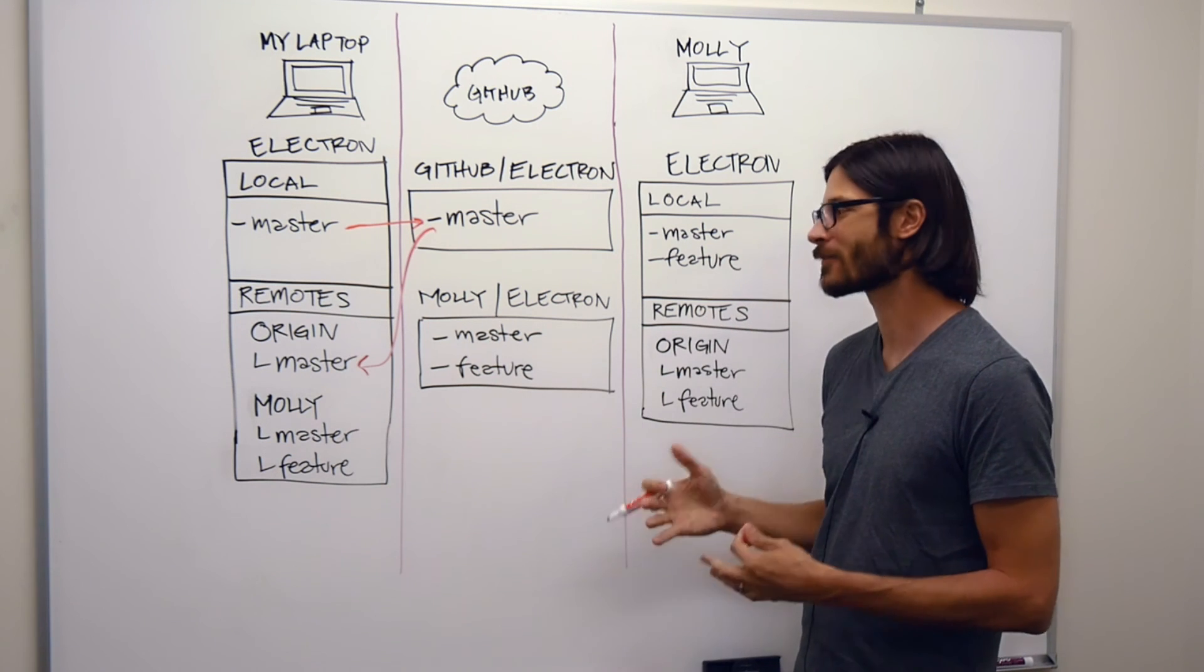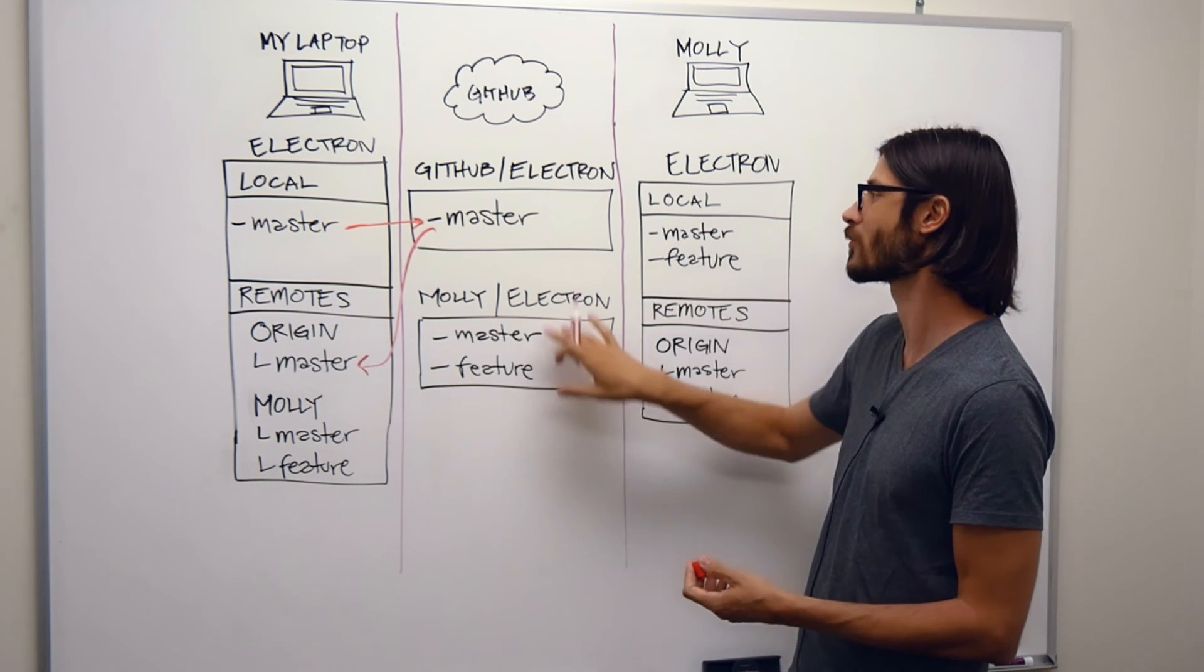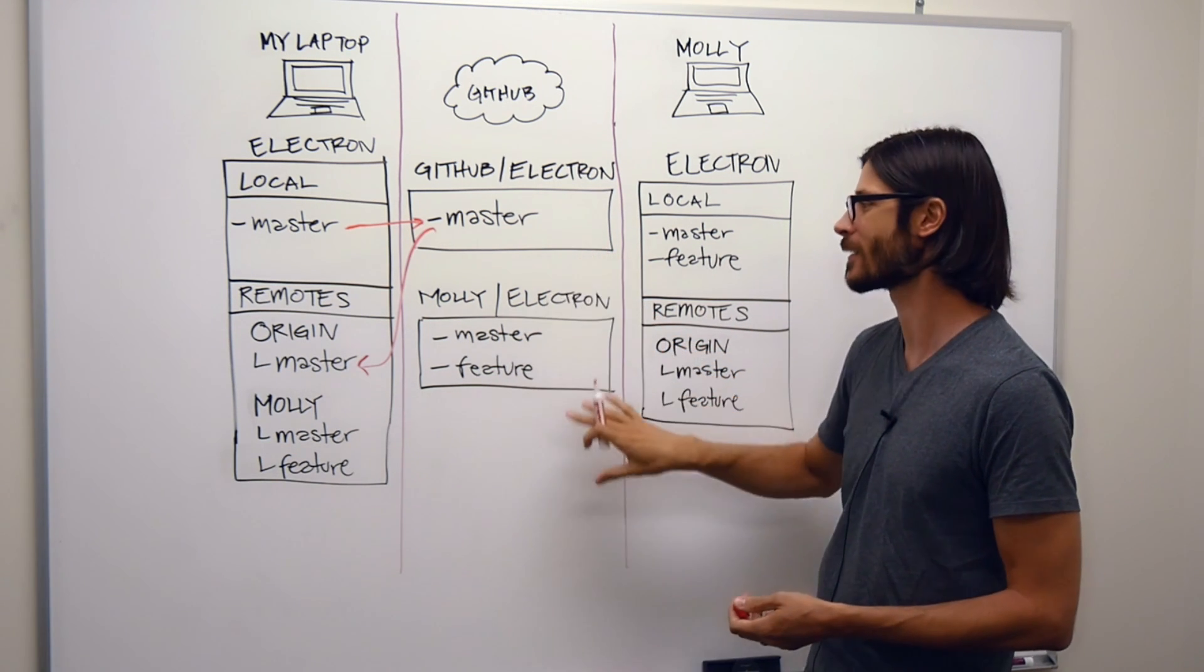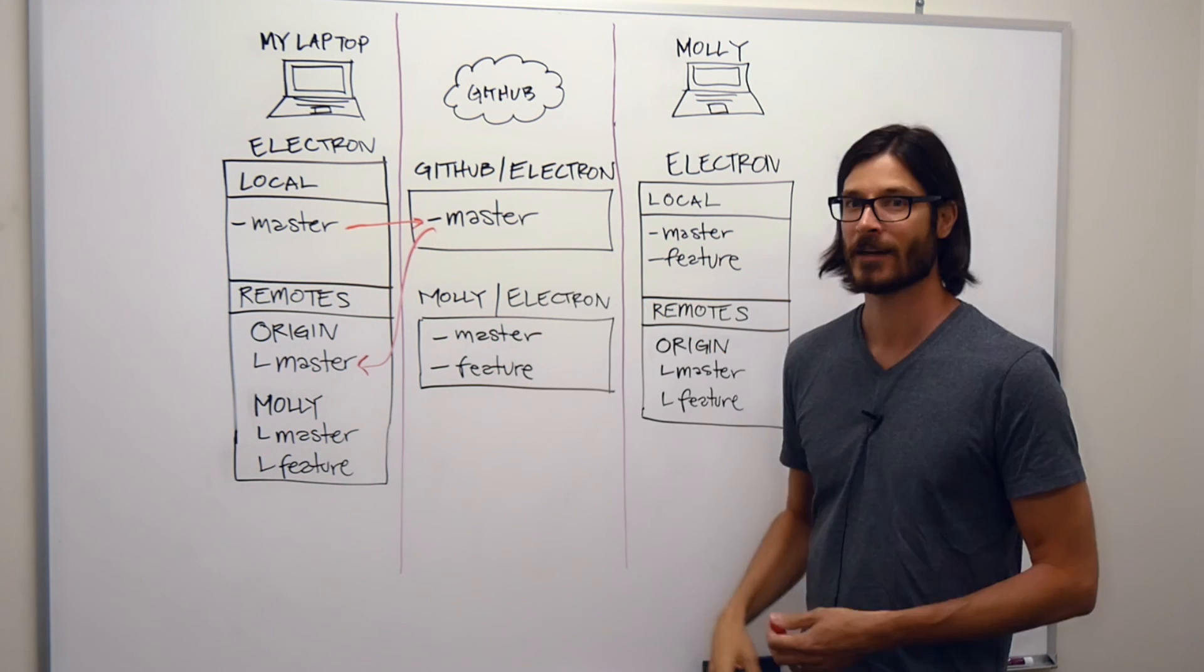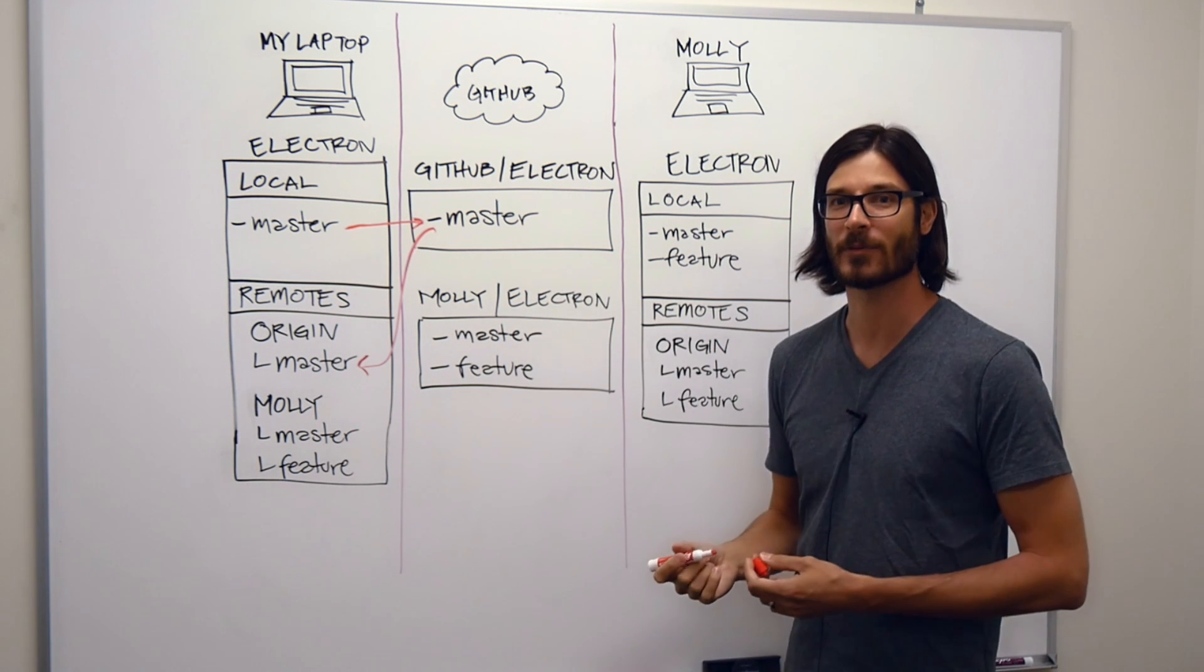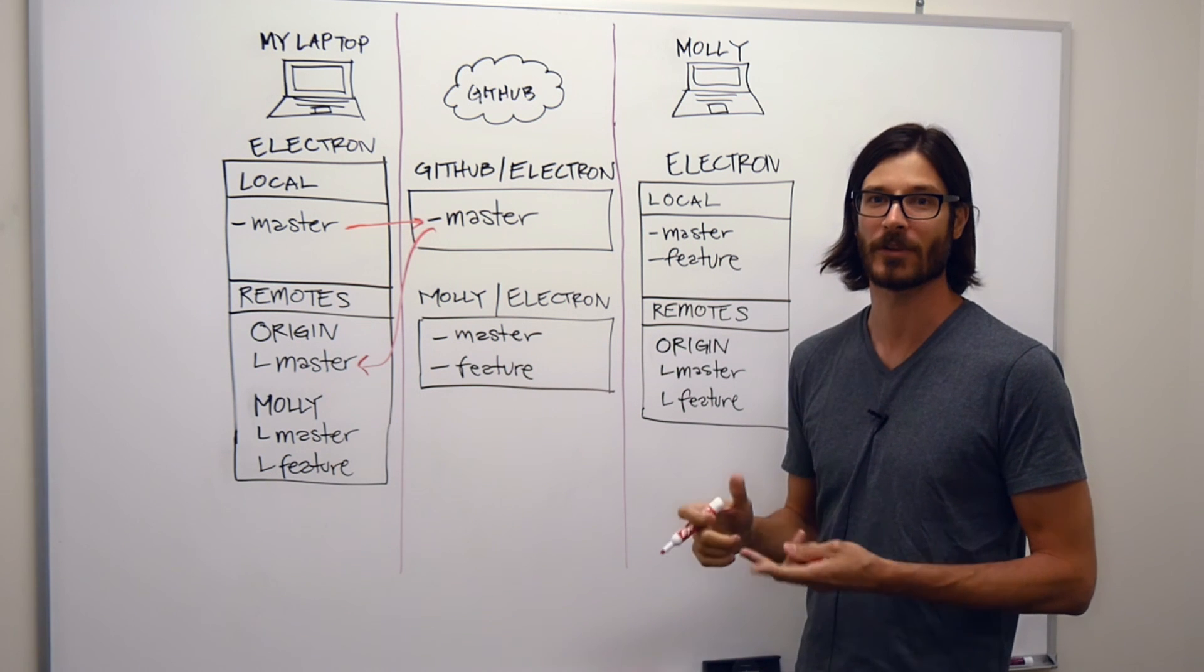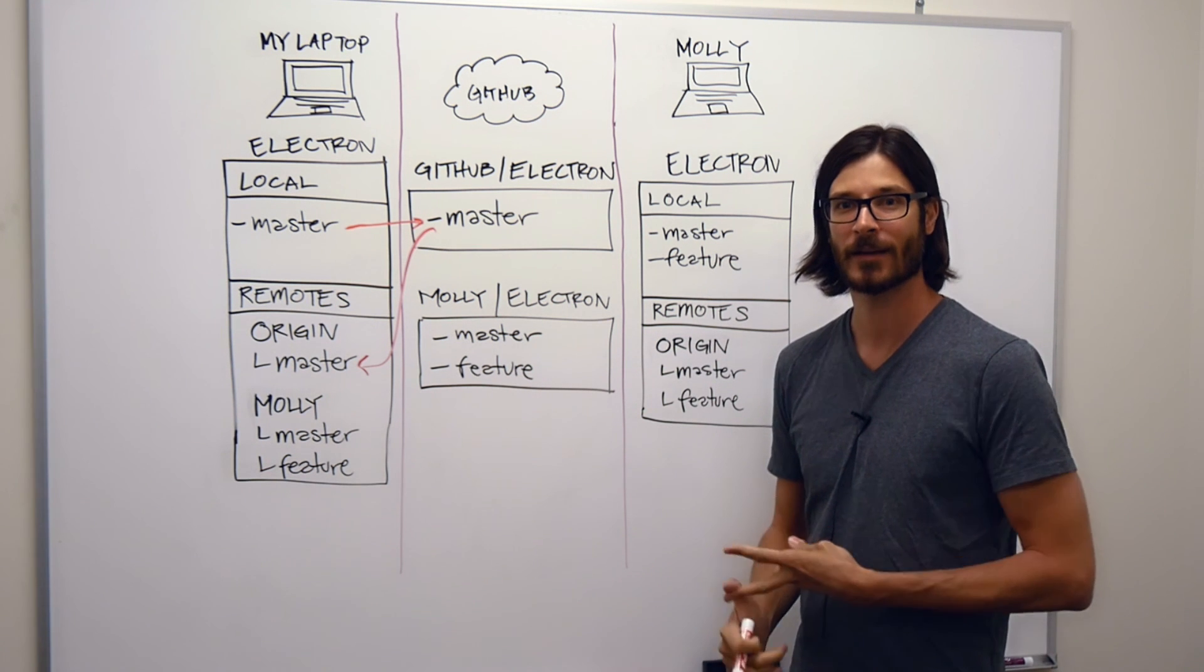Once we've got everything figured out, if we wanted to submit this as a pull request to GitHub's Electron, then it would go from Molly Electron to GitHub Electron. And that's the basics of how you would add a remote, either with cloning or with adding. I hope it's super helpful, and thank you for watching.